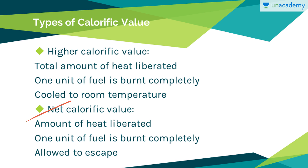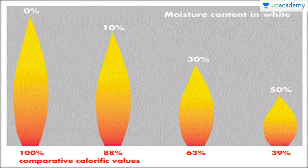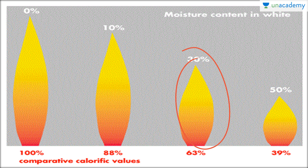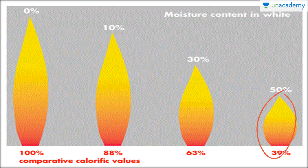The net calorific value is defined as the amount of heat liberated by the complete combustion of one unit of fuel, where the combustion gases are allowed to escape. Additionally, calorific value and moisture content are inversely proportional to each other — the lesser the moisture content, the higher the calorific value, and vice versa.